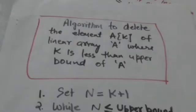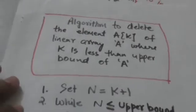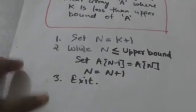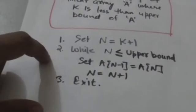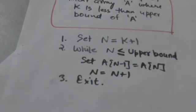Now let us see the algorithm to delete the element A[k] of linear array A, where k is less than the upper bound of linear array A. This is the algorithm to delete element A[k] of linear array A where k is less than the upper bound of linear array A.